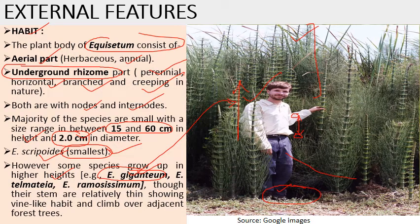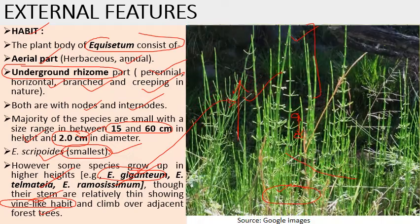Among the larger species are Equisetum telmetia and Equisetum ramosissimum. Equisetum ramosissimum shows a vine-like or climber habit — it climbs over adjacent forest trees and rocks because it has a very thin and delicate stem.